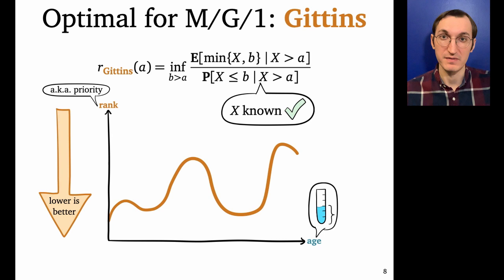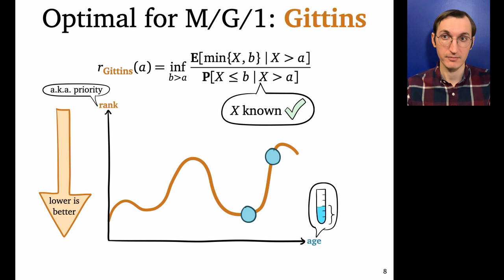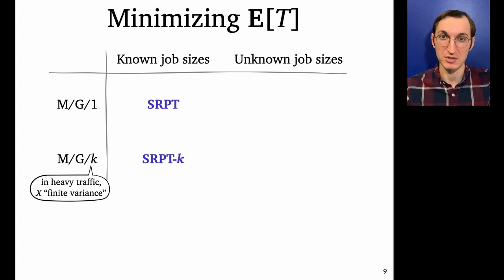So just to be very clear about how scheduling with ranks works, let's say we've got these two jobs at these two ages, which the rank function maps to these two ranks. Which job do we serve? We serve the one of lower rank. So that's the job on the right, the one of greater age to start. And then once its rank exceeds that of the other job, we switch and start serving the other one. Okay, so that's the Gittins policy. And it's optimal for minimizing mean response time in the M/G/1.